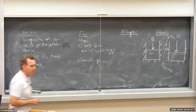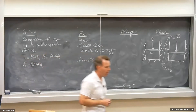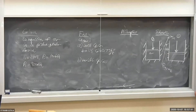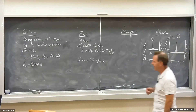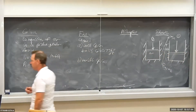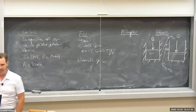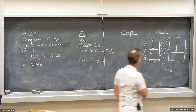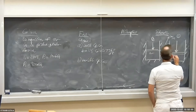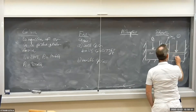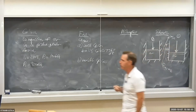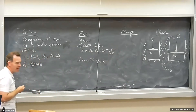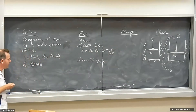Let's do an example involving compression of air in a piston-cylinder device. We have an insulated piston-cylinder device containing air, starting off at state one. The pressure and temperature at state one are 290 degrees Kelvin and 100 kPa.